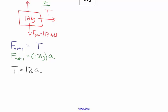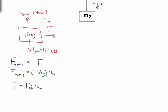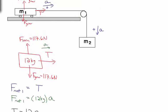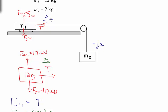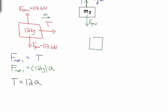I have two unknowns — the tension and the acceleration — so I'm going to need two equations. I'll get my second equation from looking at M2. On M2, we have the force of gravity acting on it pulling down, and we have the tension in the chord pulling up. M2 is 2 kilograms, so the force of gravity pulling on it is 2 times 9.8, or 19.6 Newtons, and I have the tension in the rope pulling up.